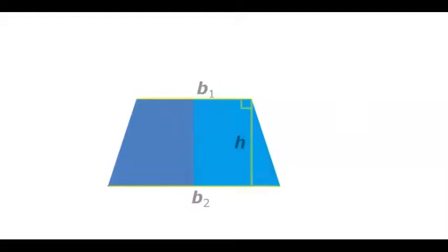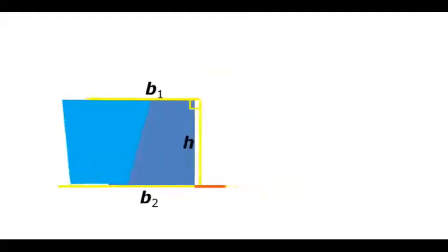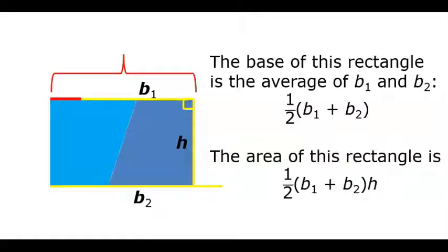A trapezoid can be decomposed and rearranged to form a rectangle. The base of this rectangle is the average of B1 and B2. That means that the area of this rectangle is 1/2(B1 + B2) × H.